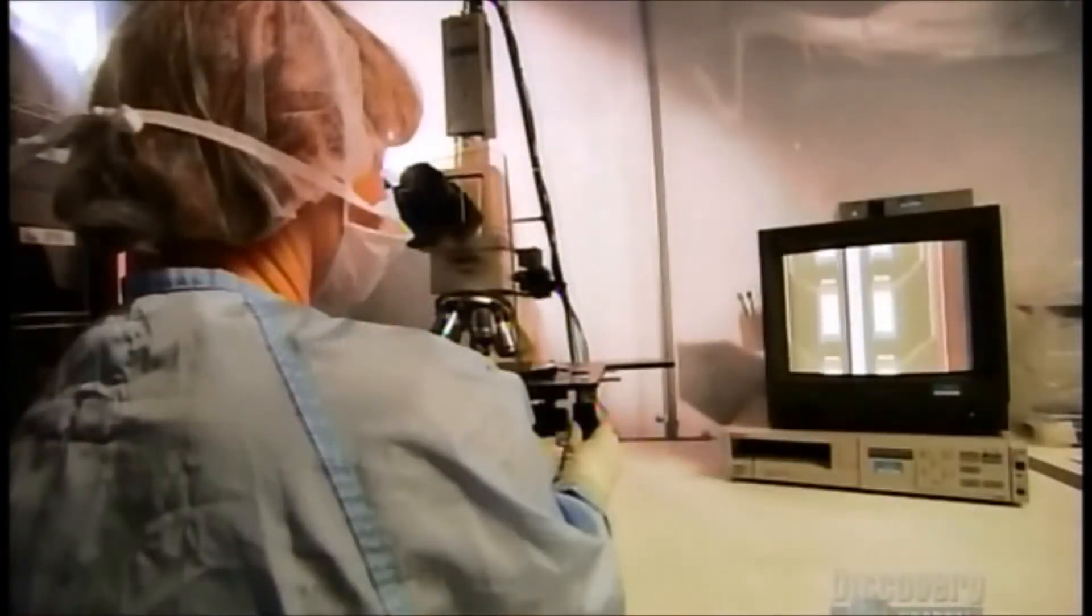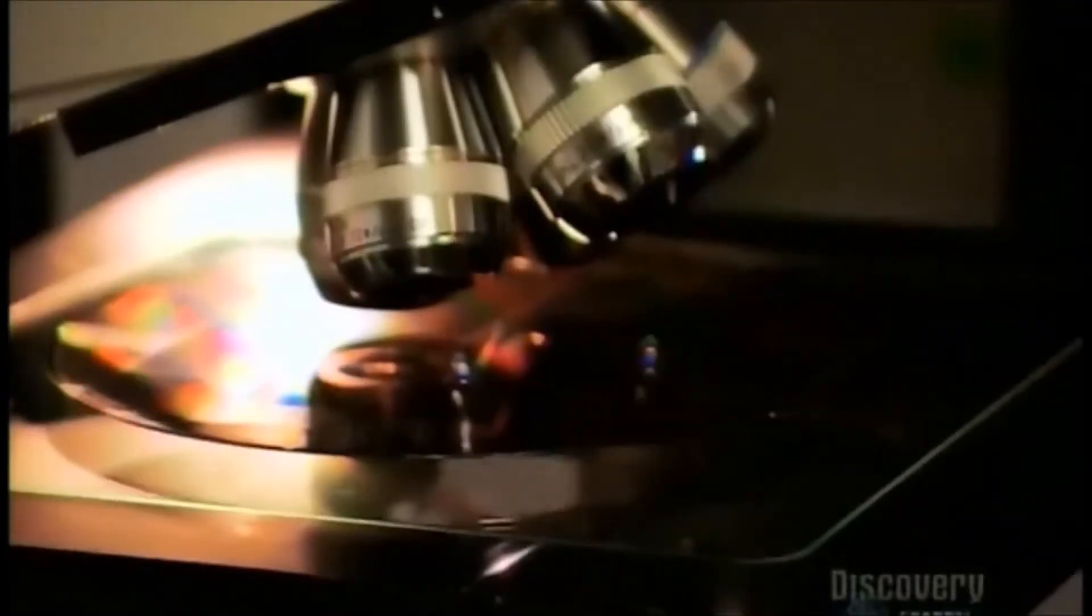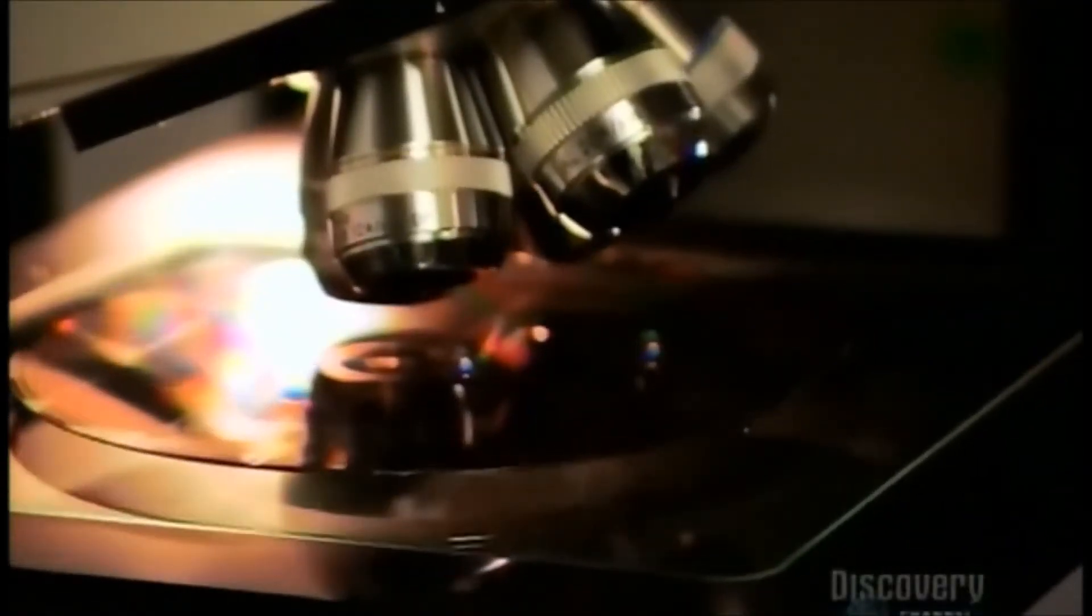This CCD with 25 million pixels is called a 25 megapixel CCD. The number of pixels on a CCD varies depending on what type of camera it's for. This company even produces a single CCD that has 111 megapixels.